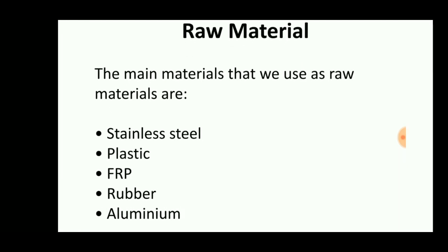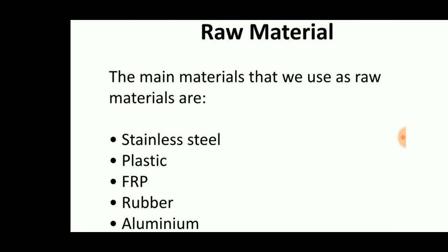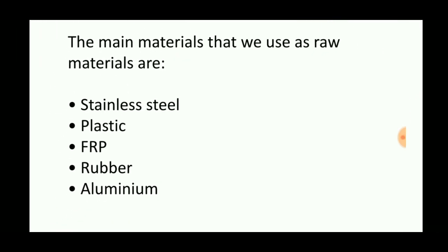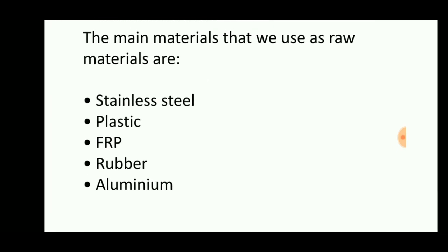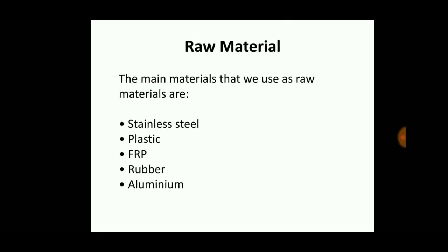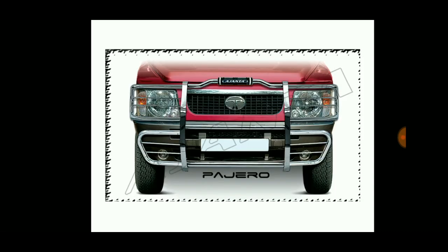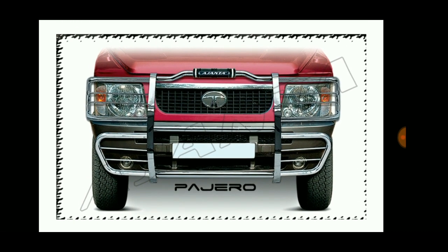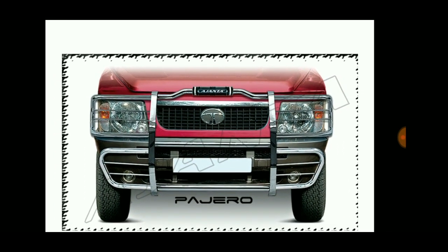Let's discuss the manufacturing process. The raw materials used in this bumper are stainless steel, plastic, FRP (fiber reinforced plastic), rubber, and aluminium. Some other materials are also used.